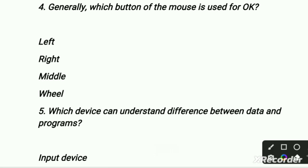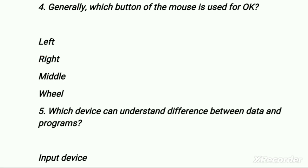Move to our fourth question. Generally which button of a mouse is used for OK? First is left, second is right, third is middle, and fourth is wheel. The right option is the first option — left. The left button of the mouse is used for OK.